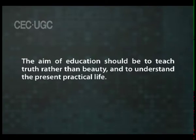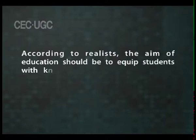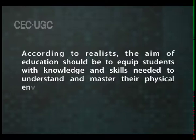Preparation for practical life. Realists believe in reality of knowledge of the external material world gained through senses. Therefore, education should prepare the child for real and practical life of the material world. The aim of education should be to teach truth rather than beauty and to understand present practical life. Education should enable students to adjust themselves to the realities of the physical world. Develop physical and mental powers. Realists give importance to physical and mental development of a child through education. Physical organs as well as the mind of a man constitute an organism composed of matter. According to realists, the aim of education should be to equip students with knowledge and skills needed to understand and master their physical environment.